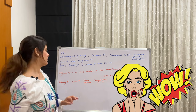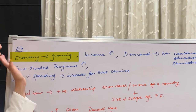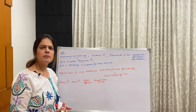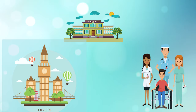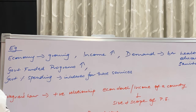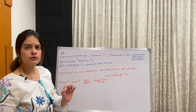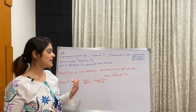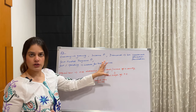Let me explain this law with a simple example. When an economy is growing, the income of the people is rising — people are earning more. When people are earning more, they will demand more: better healthcare, better education, better infrastructure, better sanitation. Due to this, government-funded programs for these services will rise, and the percentage of government expenditure on these services will definitely increase.